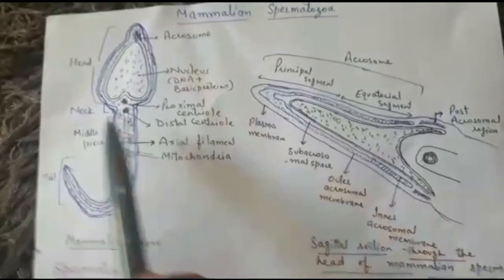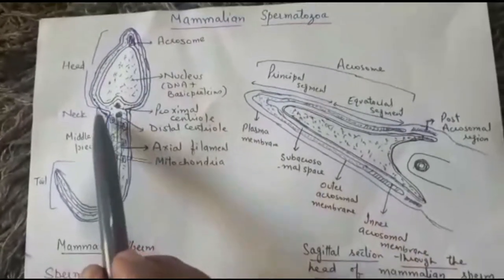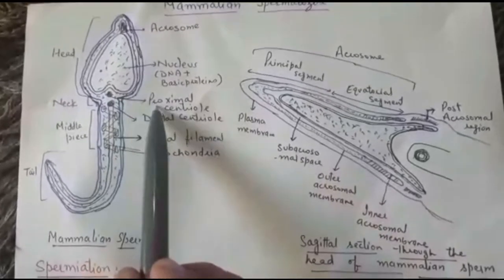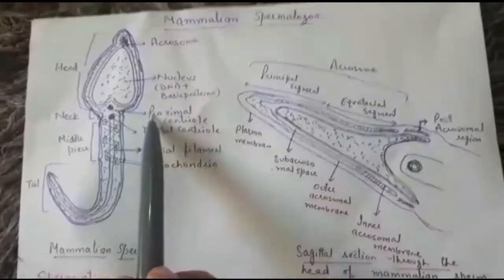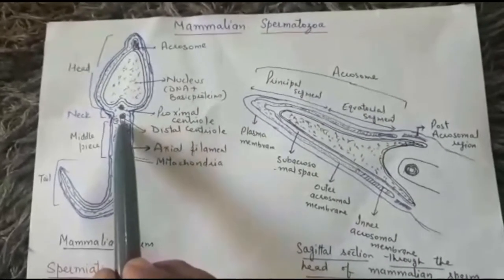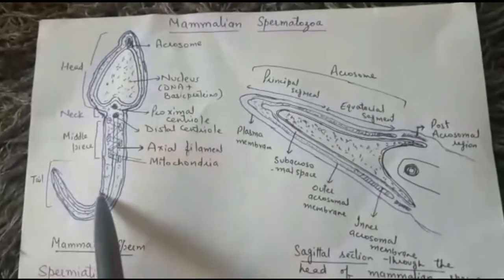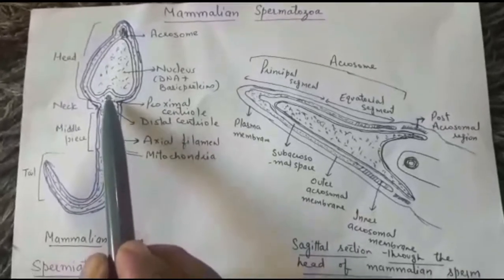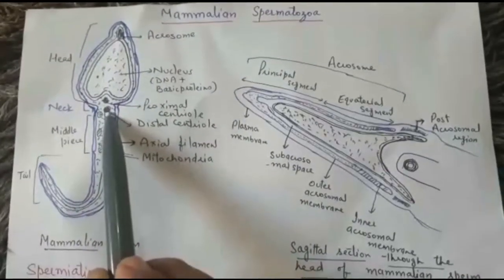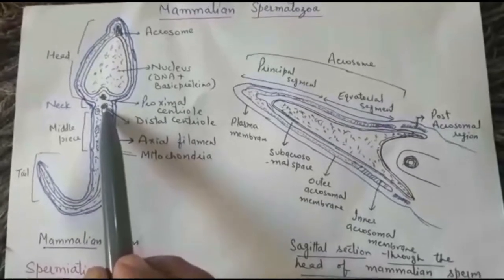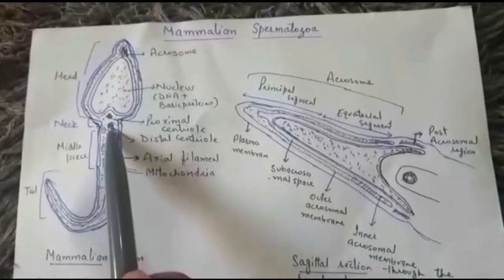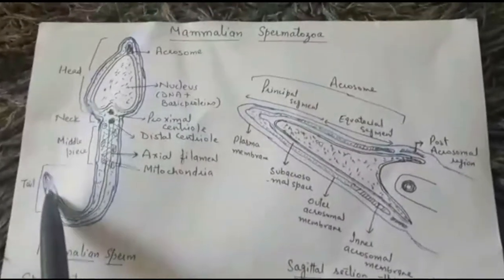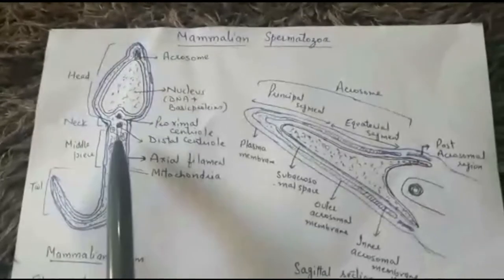Then there is a short neck. This neck has two centrioles. The proximal centriole mainly plays a role in cleavage — the first cleavage of the zygote. From the distal centriole arises the axial filament. These centrioles have a nine-plus-zero arrangement of microtubules, as studied in lower classes.